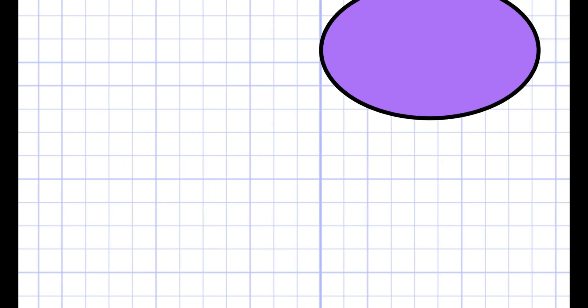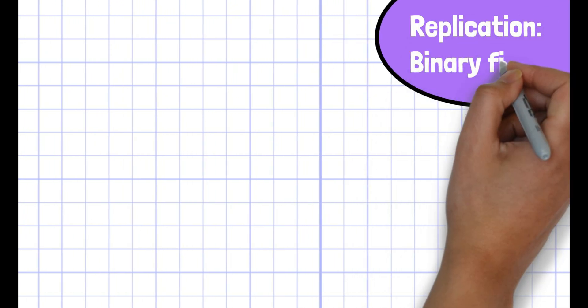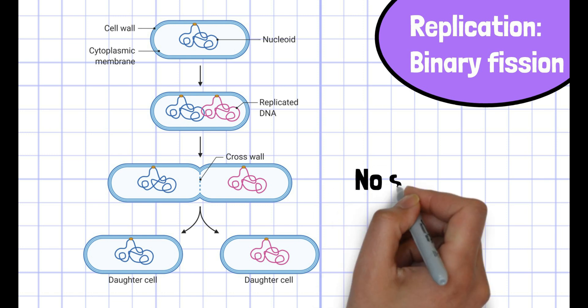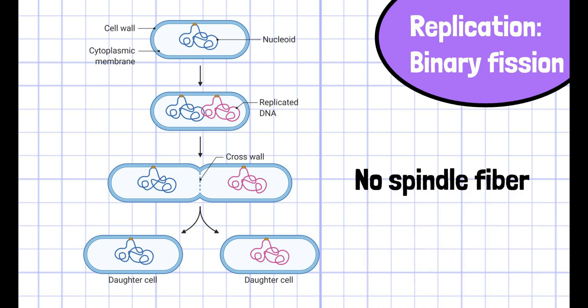The process of replication of prokaryotes is called binary fission. Although it looks similar to mitosis, they are different in the process of division of genes. Prokaryotes don't use spindle fibers, which eukaryotes do.